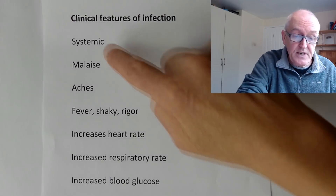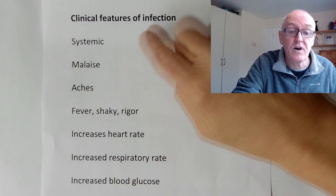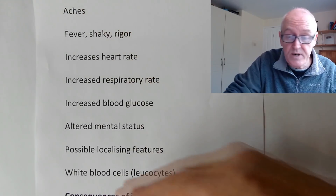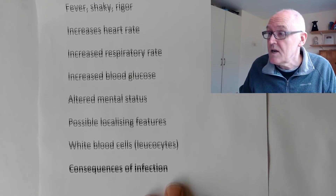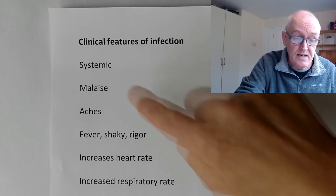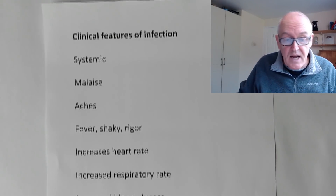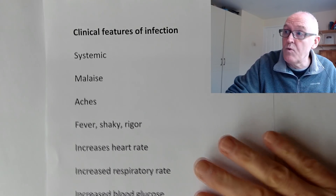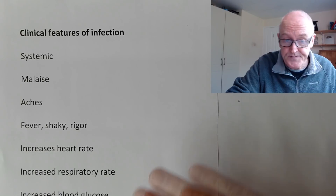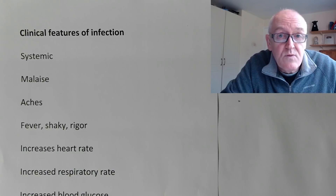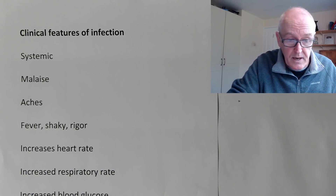If I feel these features, I think I've got a bit of a bug, a bit of infection. Or if I see these features in someone, I can say we're dealing with an infectious, systemic condition here. The thing about these infections is they are spread from one person to another usually - so these are also called transmissible diseases because they can spread from one individual to another.